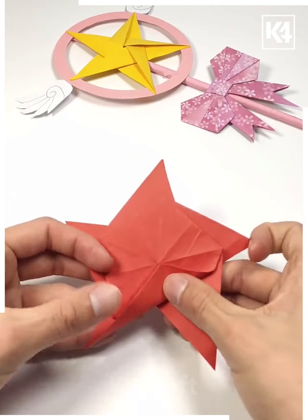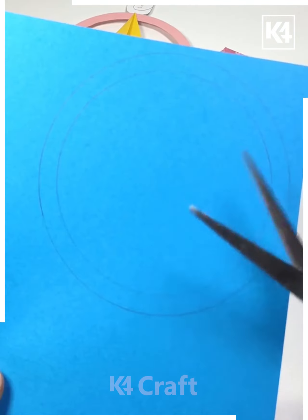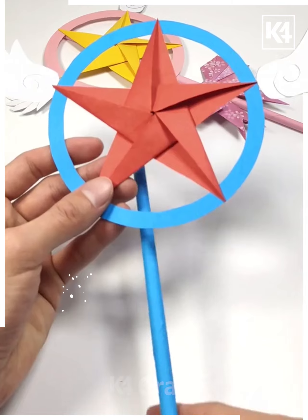When your star is ready, we're gonna make the holdings. For that we are making a circle, a stick, and a bow.